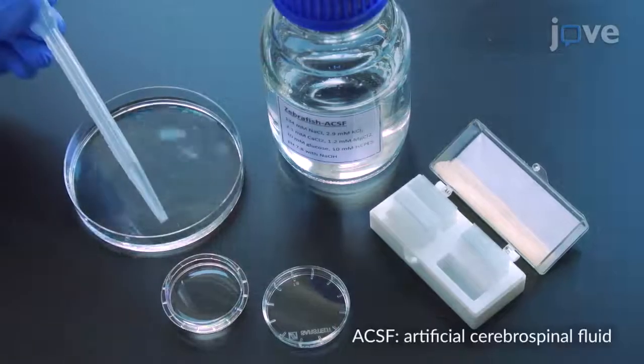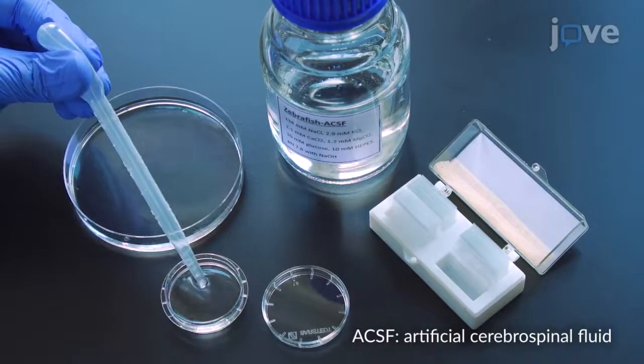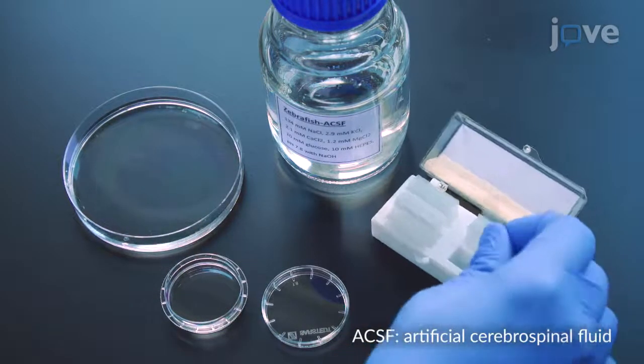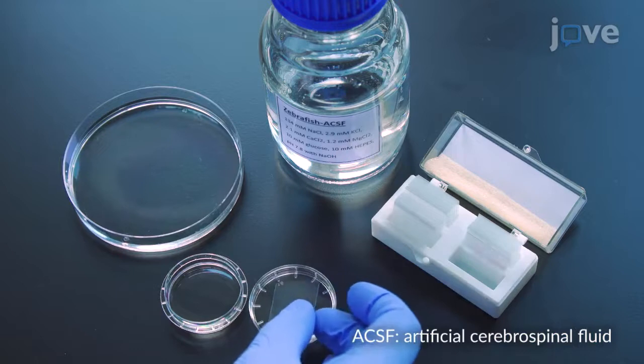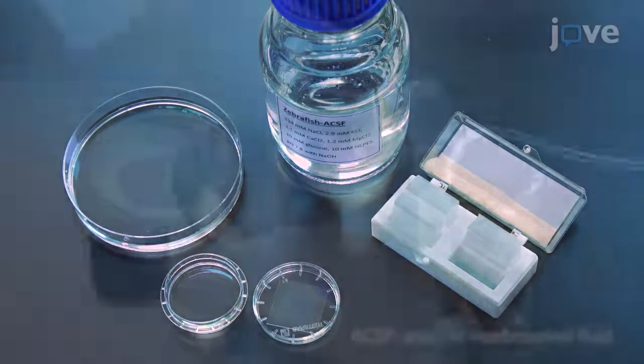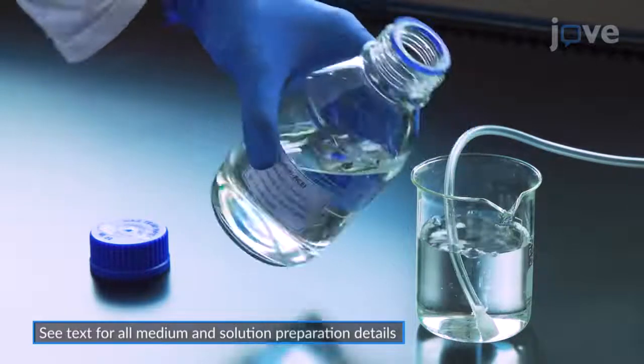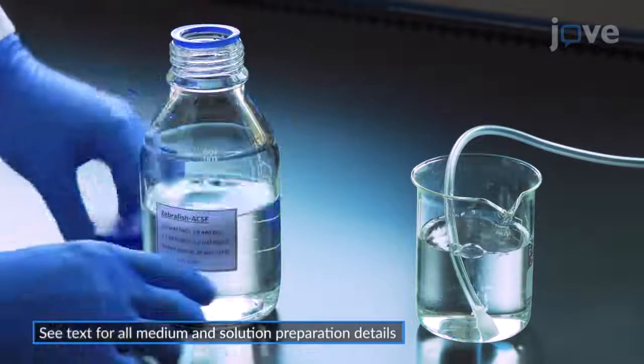Transfer the selected larvae to a 35mm diameter petri dish containing ACSF and place a 24x24mm square glass cover slip into the petri dish lid. Then aliquot the volume of ACSF needed for the experiment into an appropriate vial for oxygenation with carbogen.